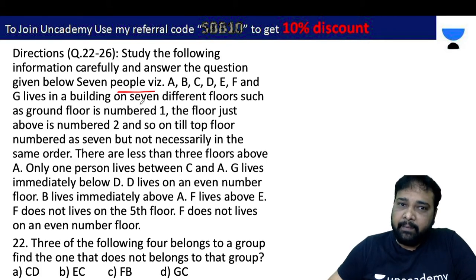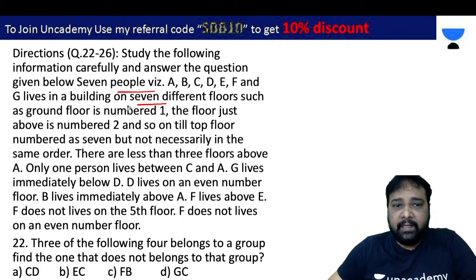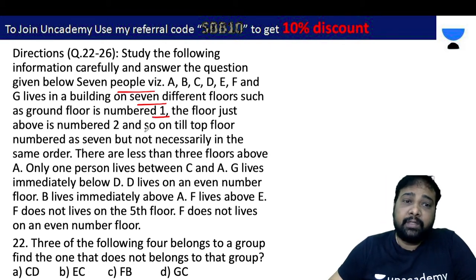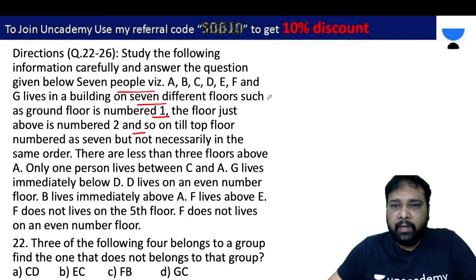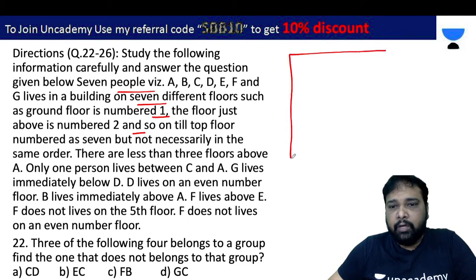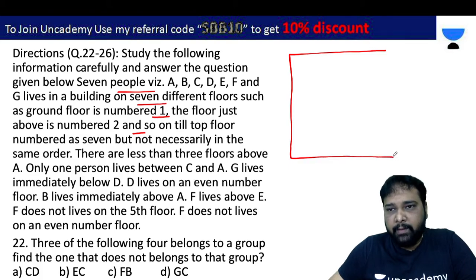This is a building with 7 different floors, such that floor number 1 is the lowest and just above it is floor 2, and so on up to floor 7. The floors are numbered 1, 2, 3, 4, 5, 6, 7 from bottom to top.